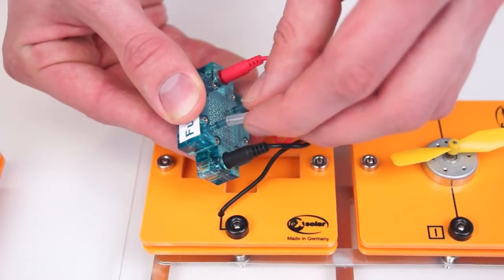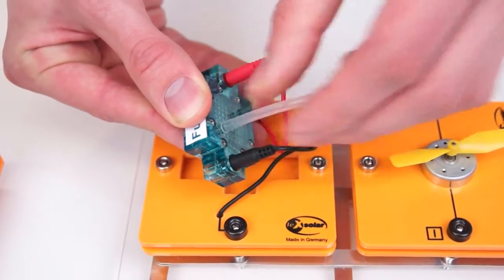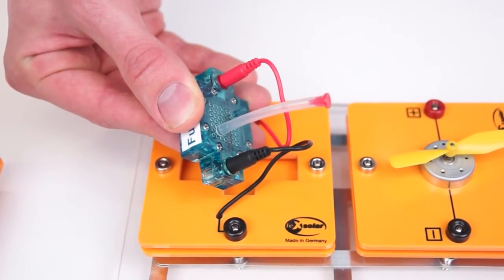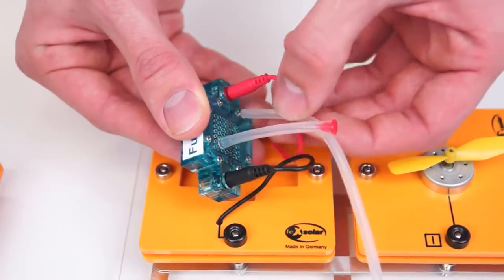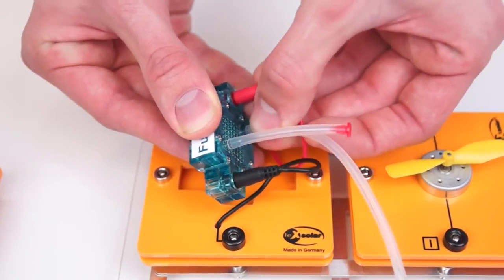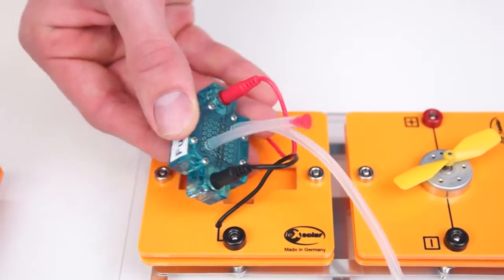Now we attach the hose with the pin in the upper opening and join the PEM fuel cell with the valve for the supply of hydrogen. Finally we put the fuel cell in the module.